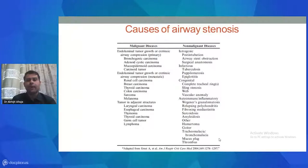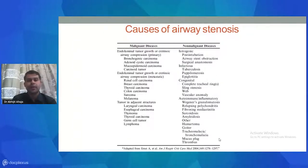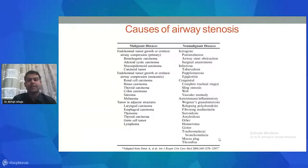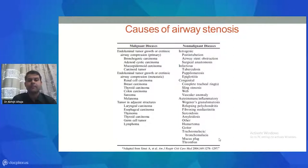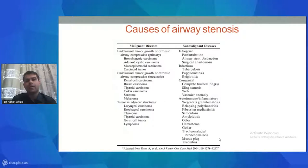There are malignant as well as non-malignant causes for airway stenosis in adults as well as children. Malignant causes can be grouped into endoluminal tumor growth or intrinsic airway compression caused by cancer growing within the airways, as well as extrinsic airway compression by metastatic cancers around the airways. Structures such as the thyroid impinging upon the airway, or tumors in adjacent structures like larynx, thymoma, germ cell tumors, and lymphomas in the mediastinum can also cause airway stenosis.